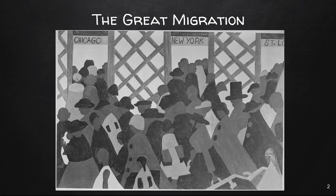The primary push factors for the migration were segregation, increase in racism, the widespread violence of lynching, and a lack of social and economic opportunities in the South. There were also factors that pulled migrants to the North, such as labor shortages in the Northern factories due to World War I that resulted in thousands of jobs available to African Americans in steel mills, railroads, meat packing plants, and the automobile industry.